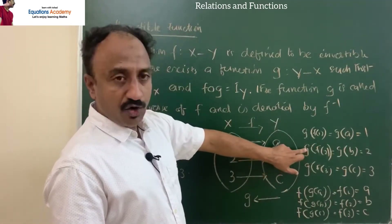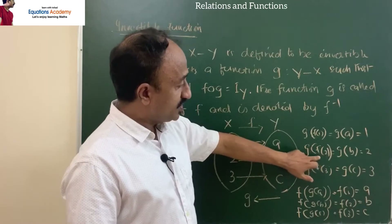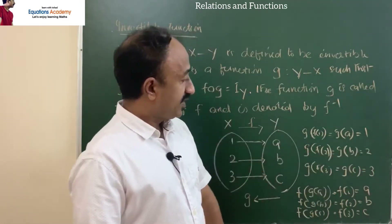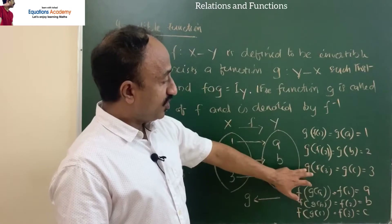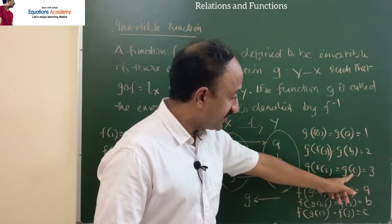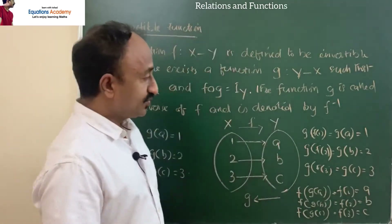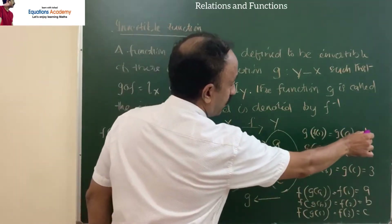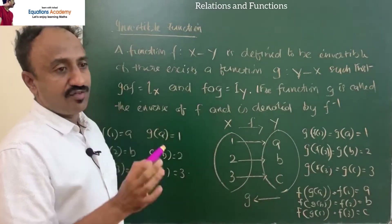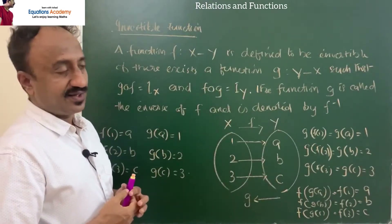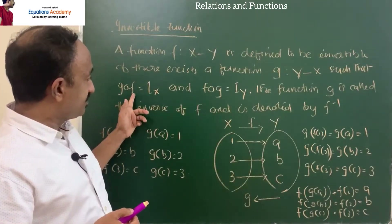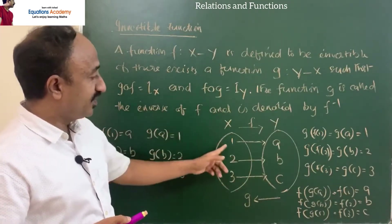g(f(2)) = g(b) = 2. g(f(3)) = g(c) = 3. So we got 1, 2, 3 as g(f(x)). That means g∘f equals X itself.